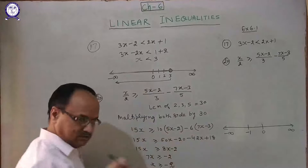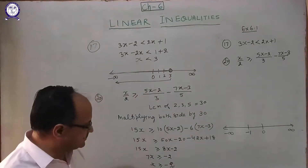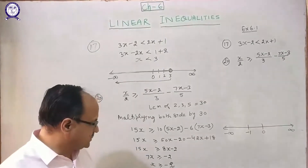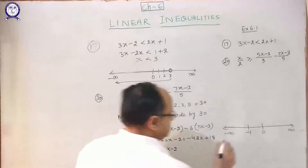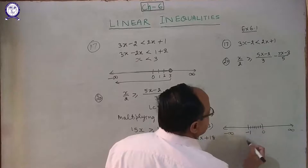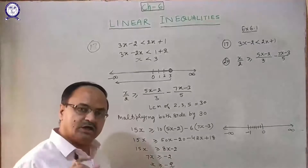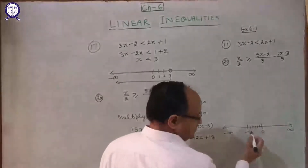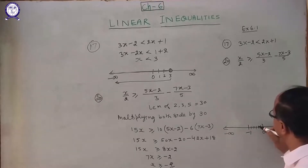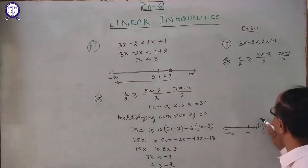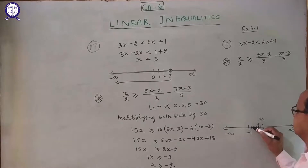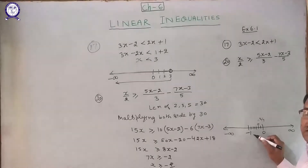We also mark minus 1. Now divide the unit interval into 7 equal parts — see the denominator is 7. Label the divisions: 1/7, 2/7 on the right, and minus 1/7, minus 2/7, minus 3/7, minus 4/7, minus 5/7, minus 6/7, and minus 7/7 which equals minus 1.